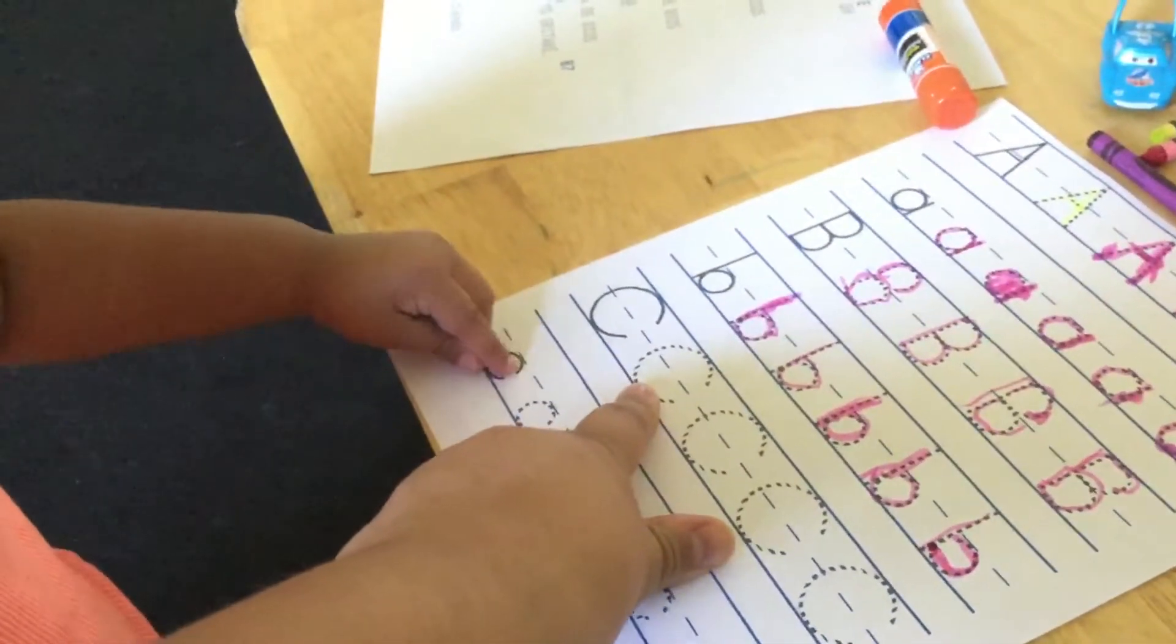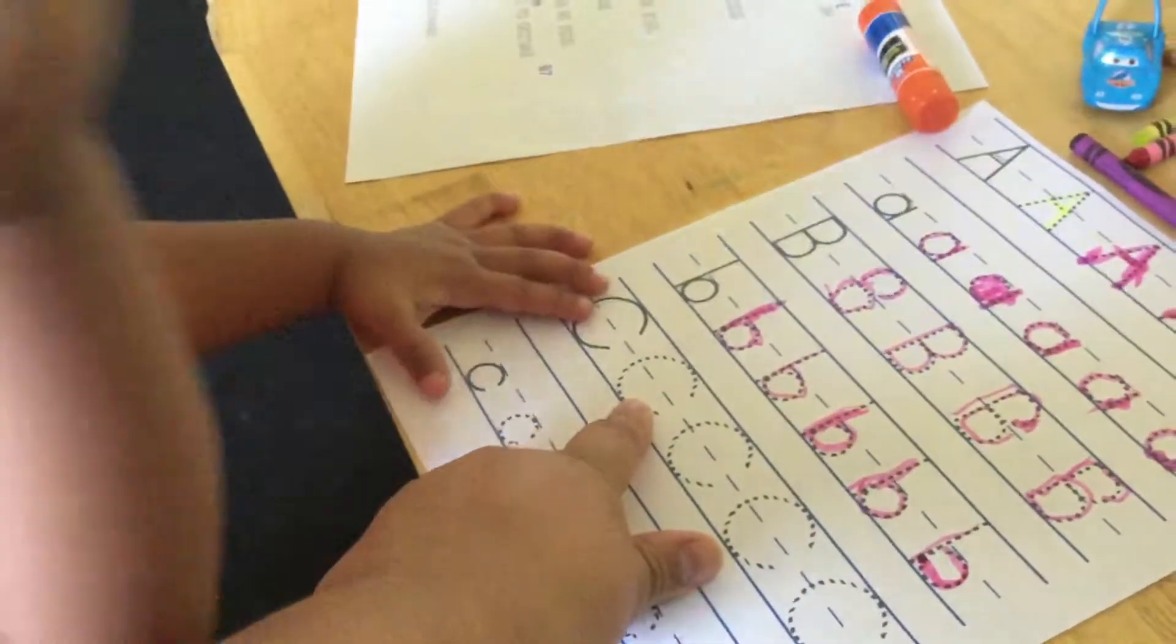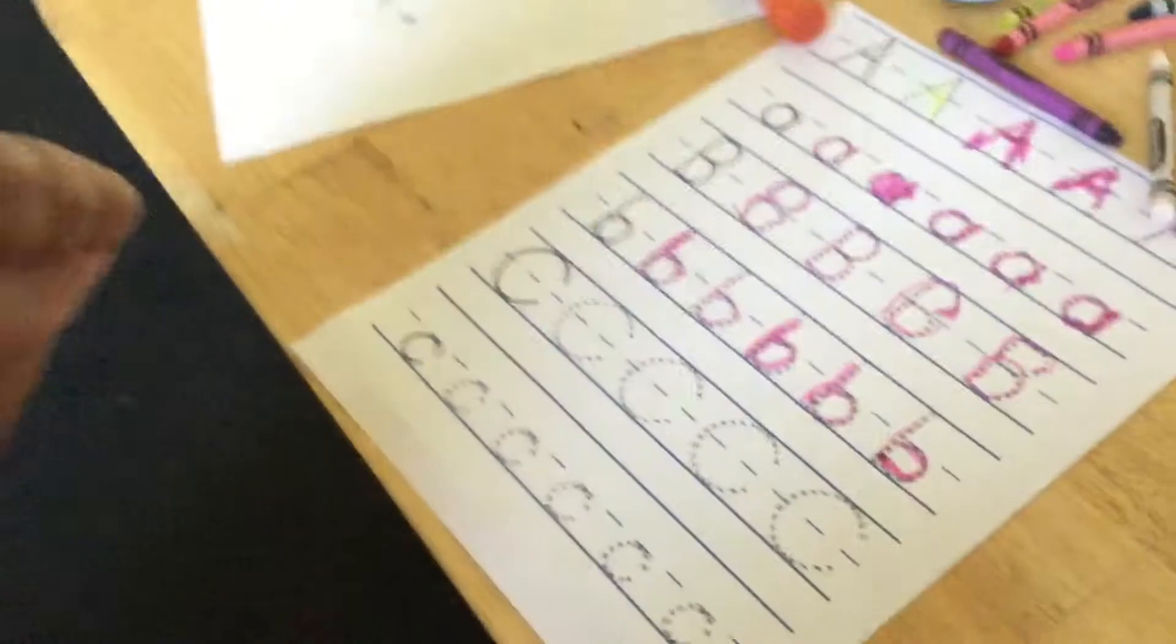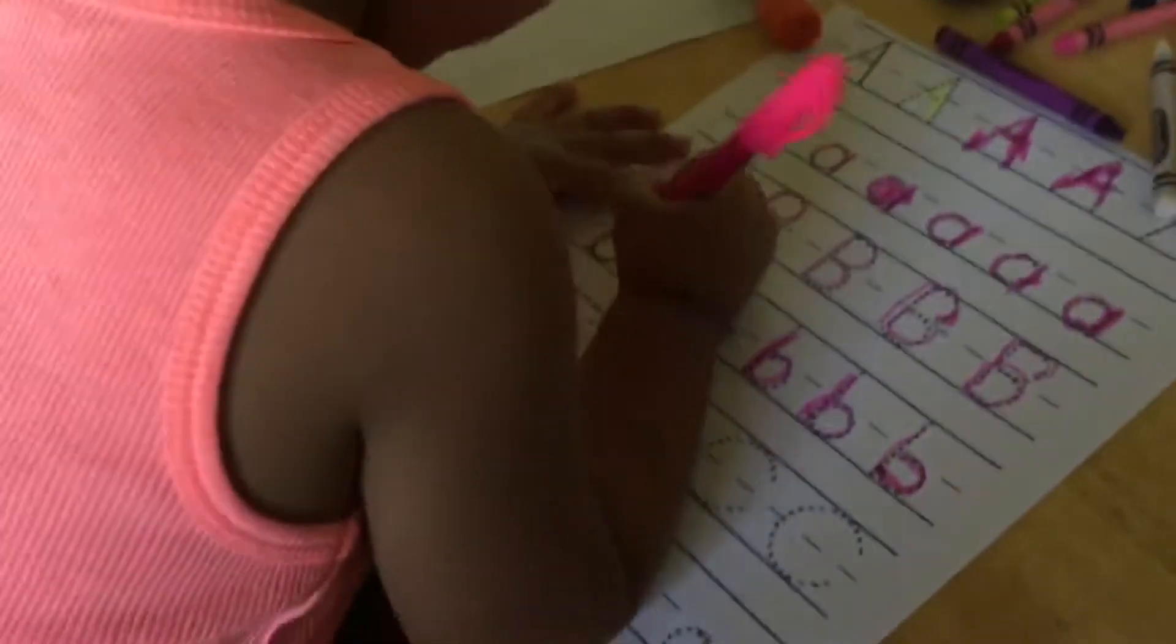Yeah. So what letter is this? Yeah, sissy for you. Oh, yeah. What letter is this? That, that, sissy. C. C. It's a C. Good job. It's a C. Yeah. Okay. Now trace the C's.